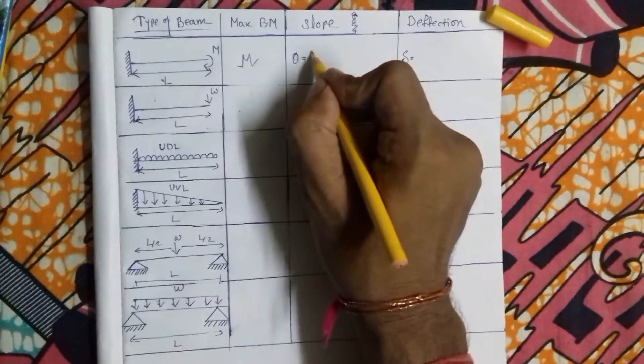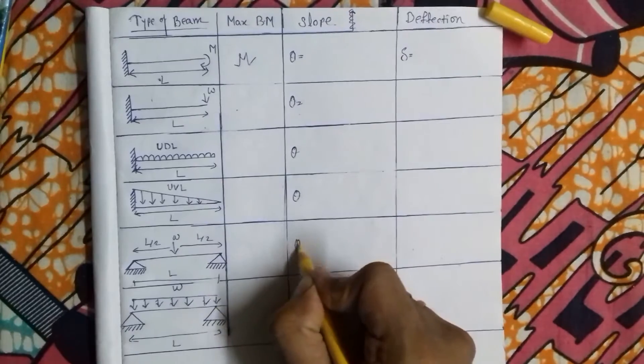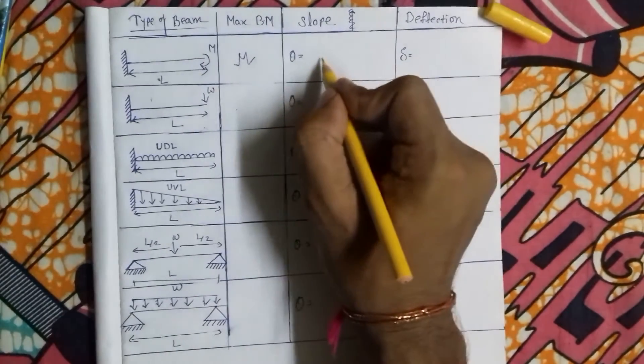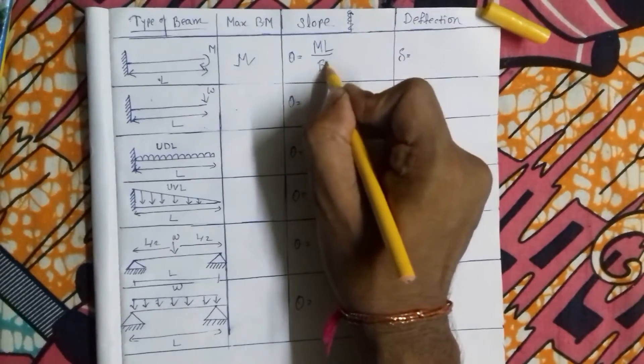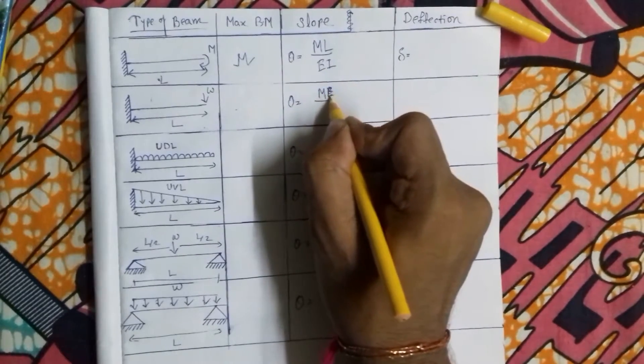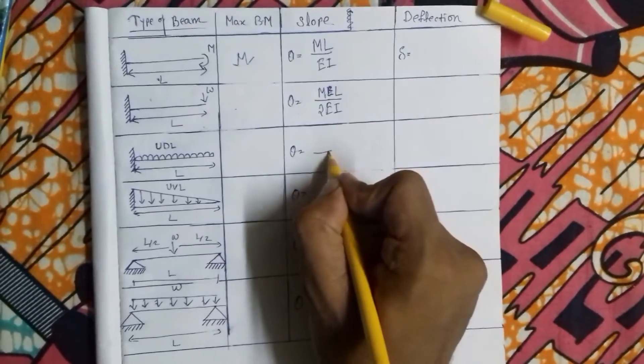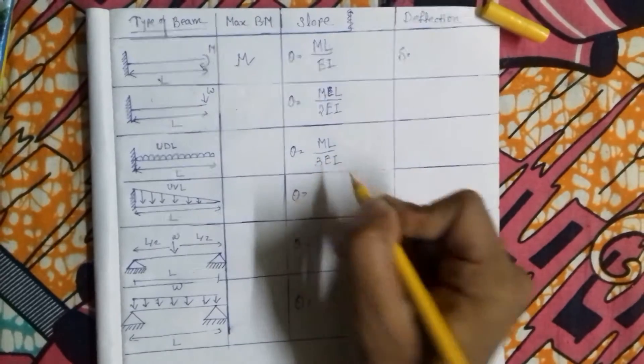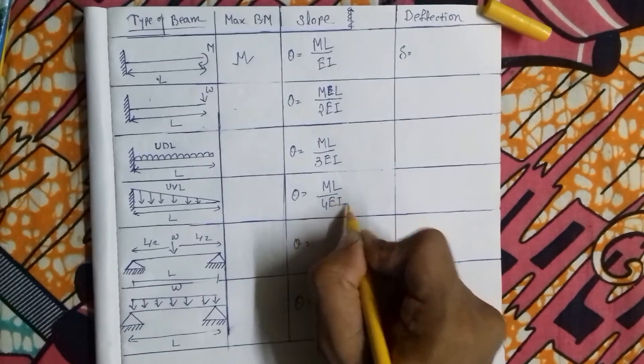First of all we write: ML by EI, ML by 2EI, ML by 3EI, ML by 4EI.